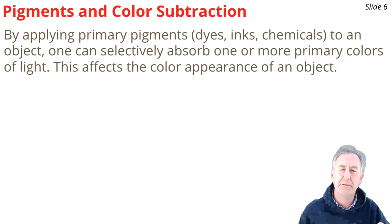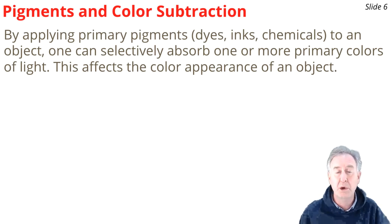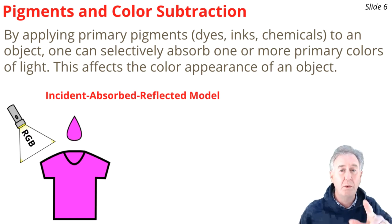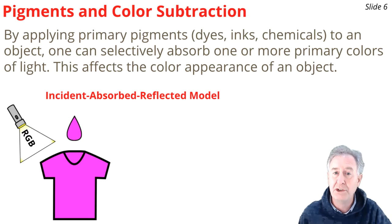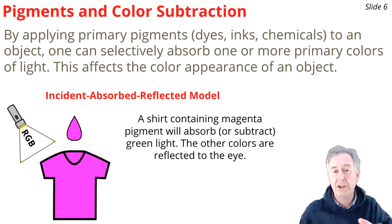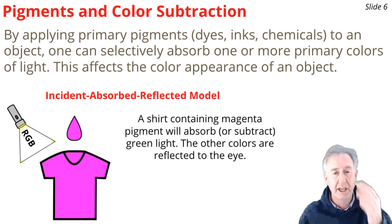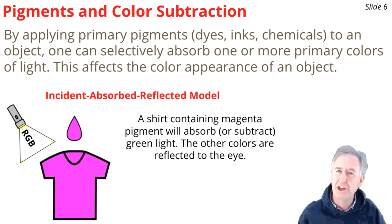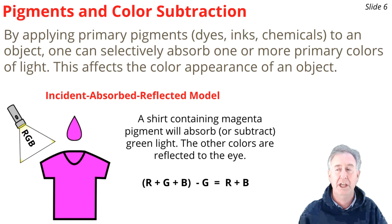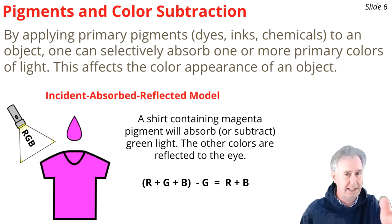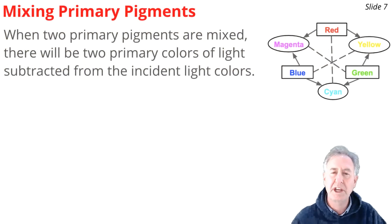When you apply a pigment to an object — a sheet of paper, a shirt, whatever it is — that pigment will absorb a single primary color of light. For example, a shirt with magenta pigment under white light (red + green + blue): the magenta absorbs the green light. Red and blue remain and reflect to your eye, and your brain says that's a magenta shirt. As a color subtraction equation: (R + G + B) − G = R + B = magenta.